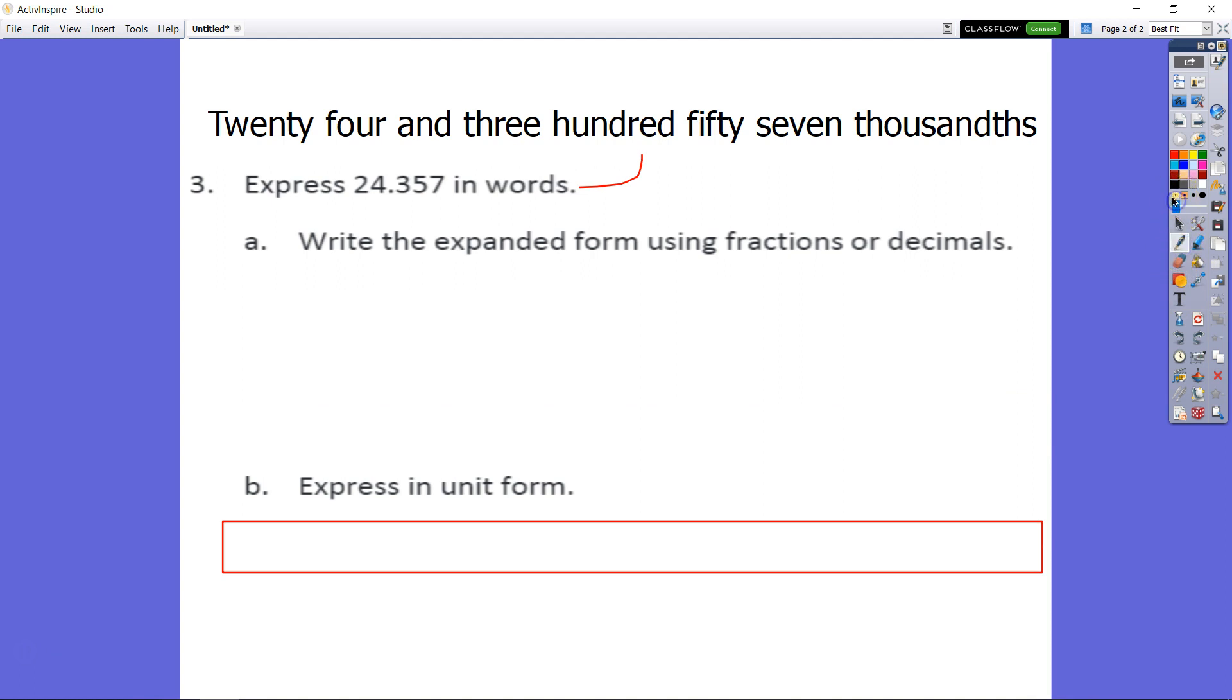Let's go fraction form first. If we have this number here, we know we have 24.357 thousandths. You want to take each digit out and then multiply it by its place value.